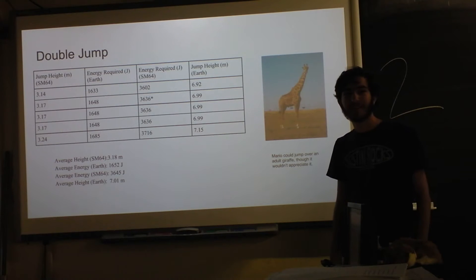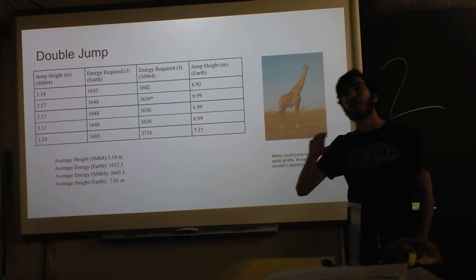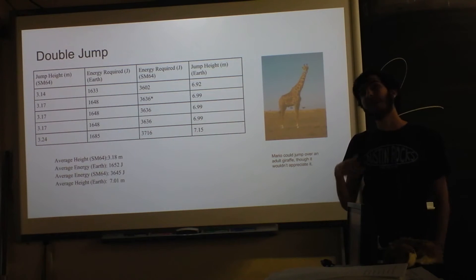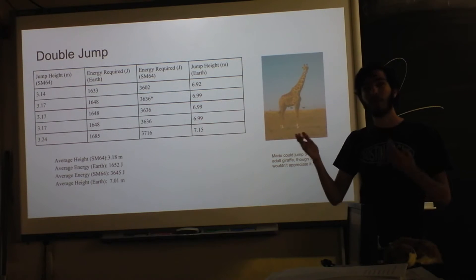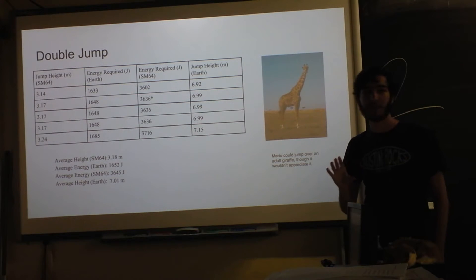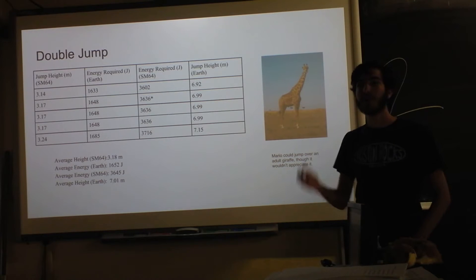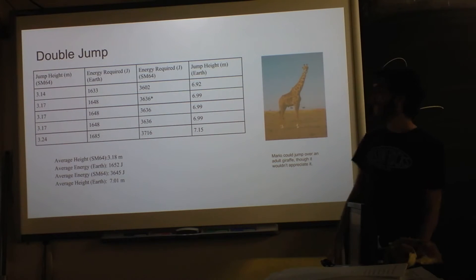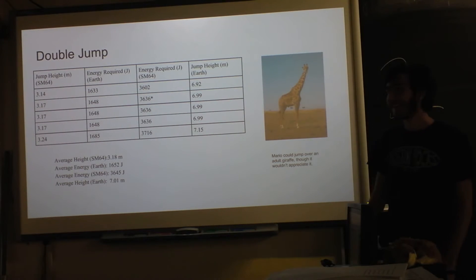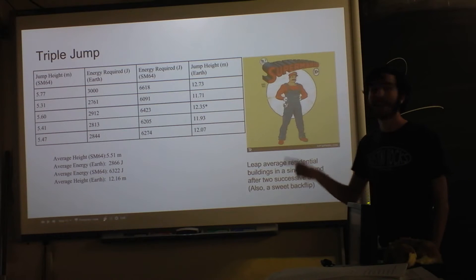So in the game, when he's standing still, if you jump after just jumping once in quick succession, he'll jump a second time but higher than the first jump — both jumps are off the ground. He jumps, lands, and then jumps again higher than the first time. There's also a triple jump, which he can only do while he's moving, which made collecting the data tricky.